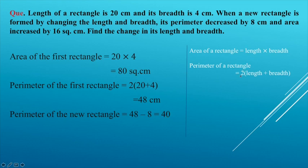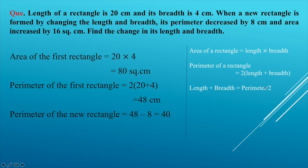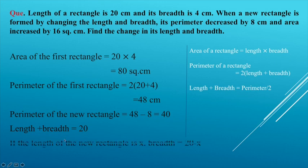The perimeter of a rectangle equals 2 into (length plus breadth). So length plus breadth equals perimeter divided by 2, which is 40 divided by 2, equal to 20. If the length of the new rectangle is x, then breadth is equal to 20 minus x.